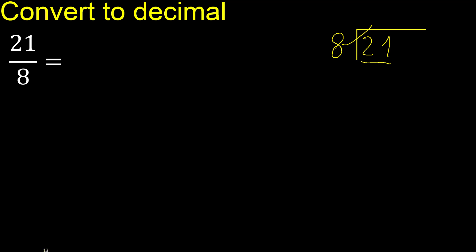8 multiplied by 3, 24. 24 is greater. 8 multiplied by 2, 16. OK, is not greater. 21 minus 16 is 5.